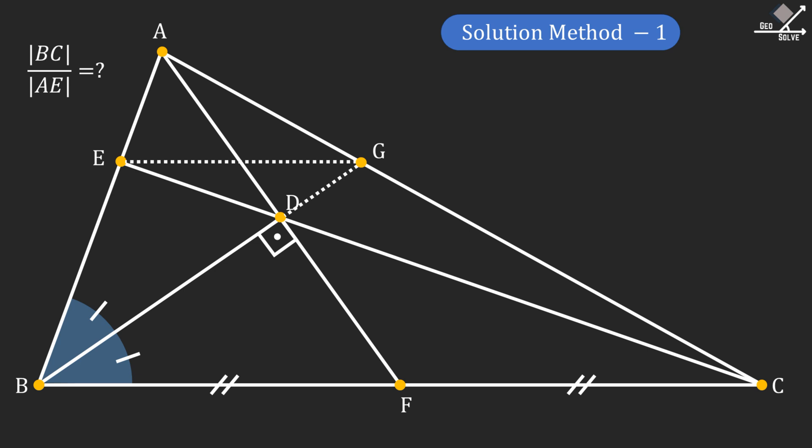At this point we can apply Ceva theorem on triangle ABC. Ceva theorem states that if all three cevians intersect on a single point inside the triangle, multiplication of the line segment ratios on each side created by these cevians must be equal to 1.